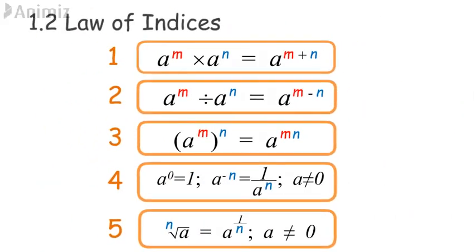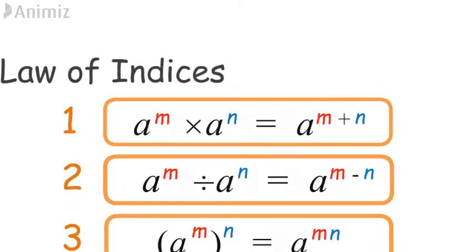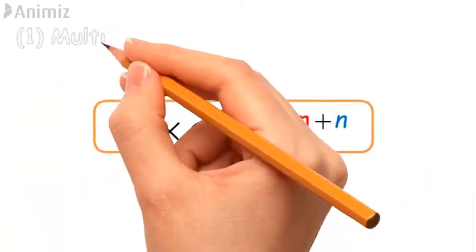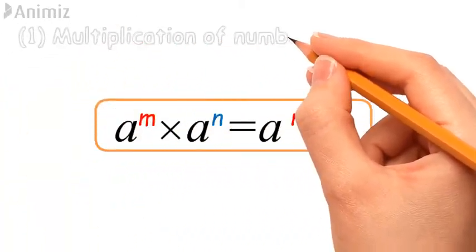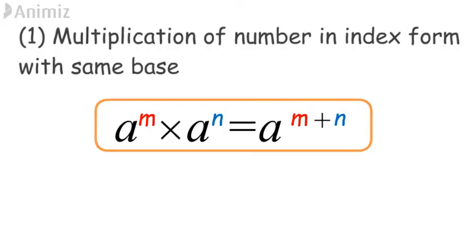Now we learn the five laws of indices. First law: multiplication of numbers in index form with the same base. a^m × a^n = a^(m+n). Note: when we write a alone, it implicitly means a to the power of 1.